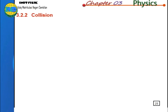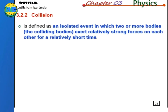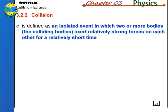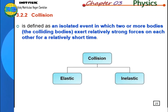Now we move to the next subtopic. Collision is defined as an isolated event in which two or more colliding bodies exert relatively strong forces on each other for a relatively short time. We have two types of collision: elastic collision and inelastic collision.